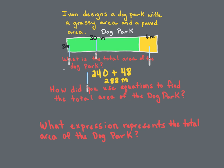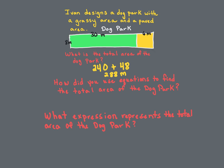The next question says: how do you use equations to find the total area of the dog park? We wrote the equation 8 times 30 to get 240, and then 8 times 6 to get 48. So we have: 8 times 30 equals 240 — that's one equation. Then 8 times 6 gives us 48. And then 240 plus 48 equals M. When we solve for M, M is equal to 288.